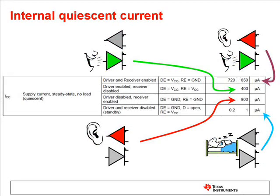The internal quiescent current provides biasing for the internal circuits of the transceiver. The current is specified in the datasheet and will depend on whether the driver or receiver or both are active.